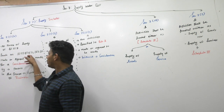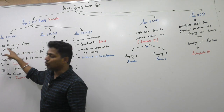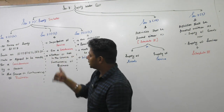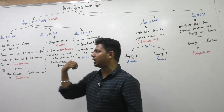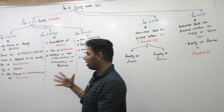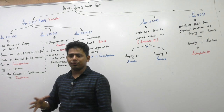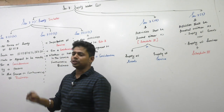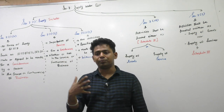So to recall: all forms of supply of goods, service or both — such as sale, transfer, barter, exchange, lease, rental, license, and disposal — made or agreed to be made for a consideration by a person in the course or furtherance of business.